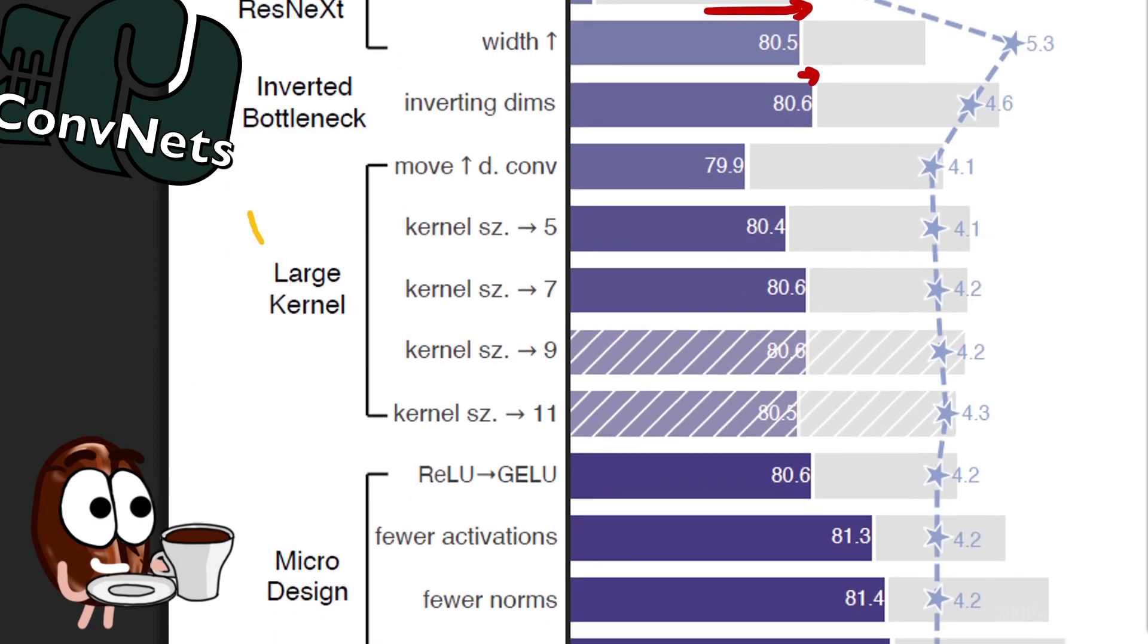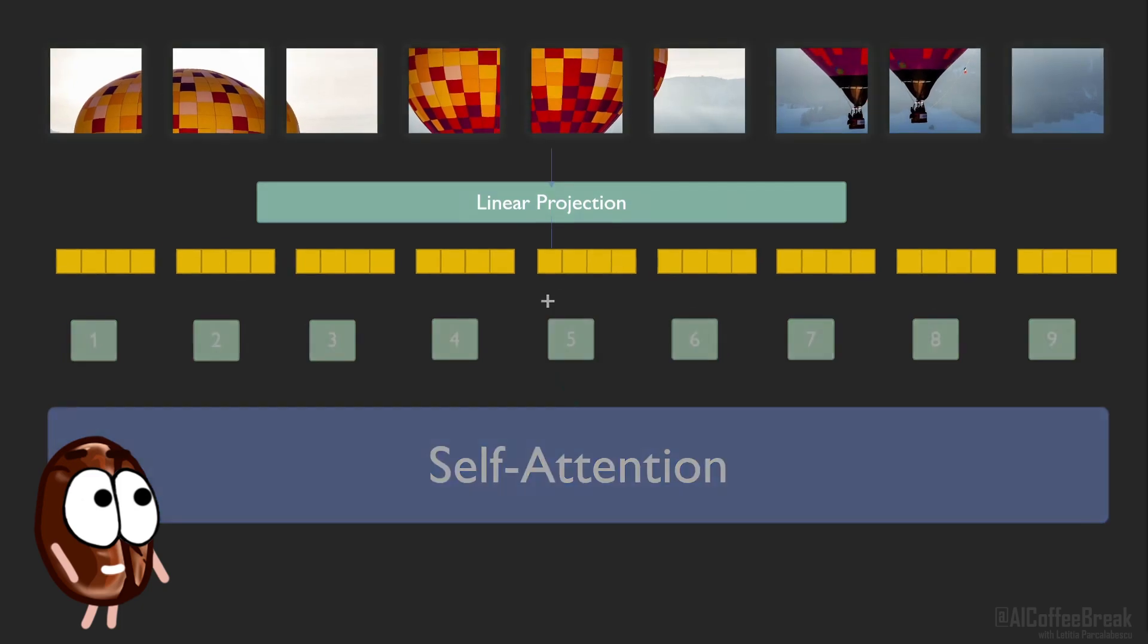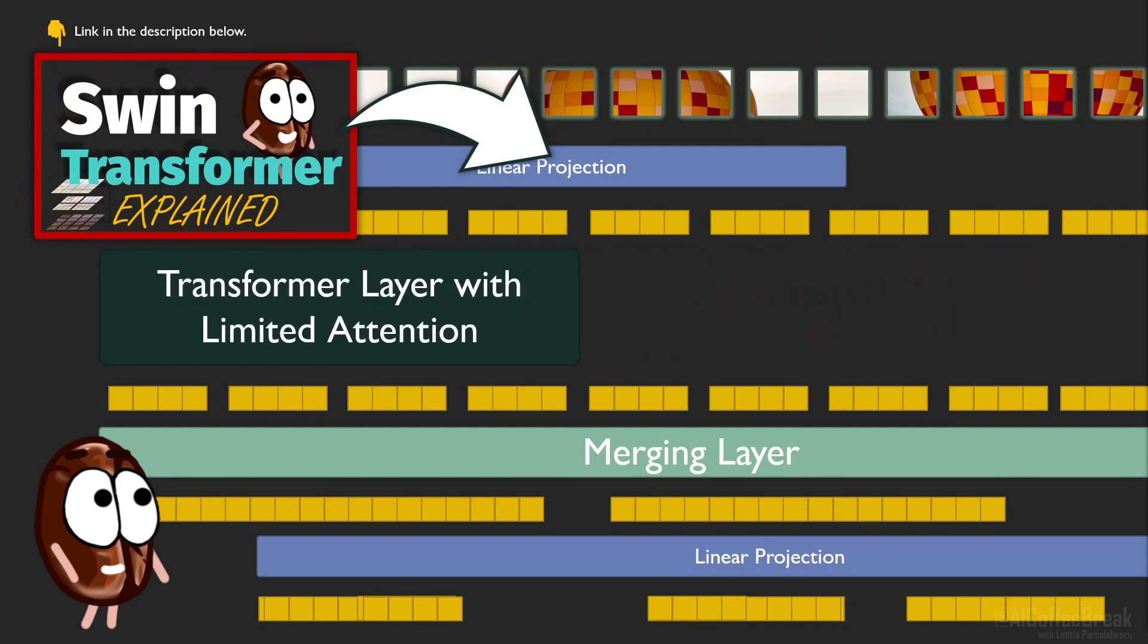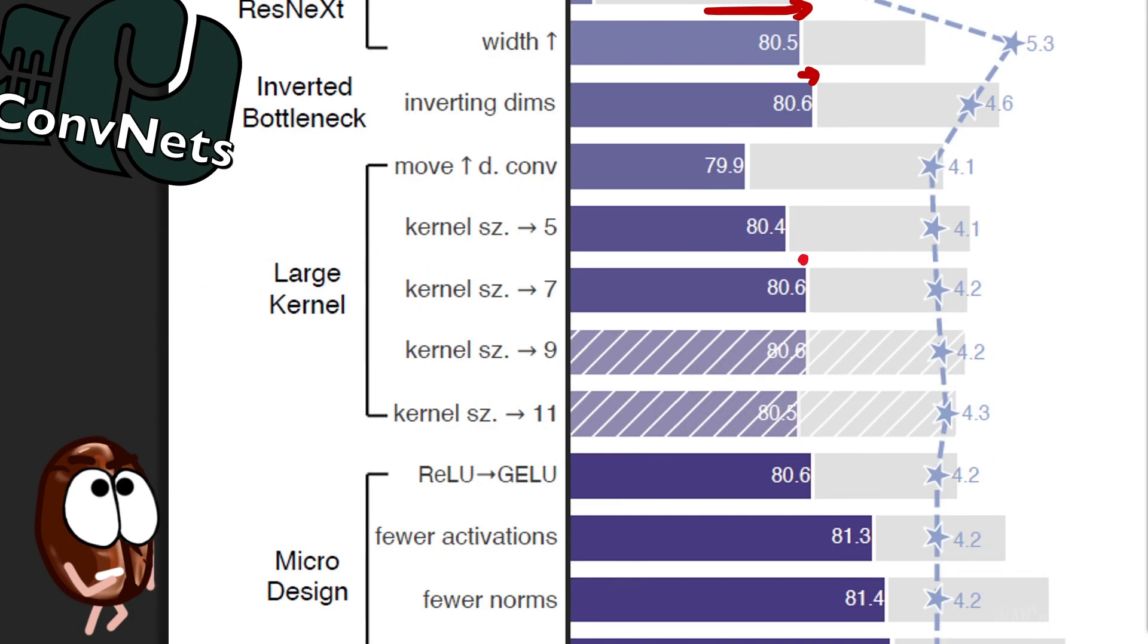The fifth stage introduces larger kernel sizes. This tries to equal the power of vision transformers that have a global receptive field and see the image at once through self-attention that spans the whole image. But SWIN transformers limit the self-attention window, so if the authors increase the resnet's window size, then they should reach the same compromise. This results in an increase in performance of nothing, but it's clear that small kernel sizes hurt the performance.